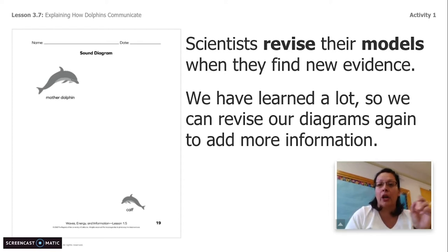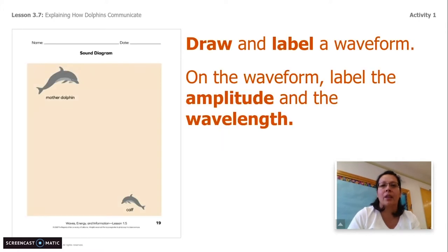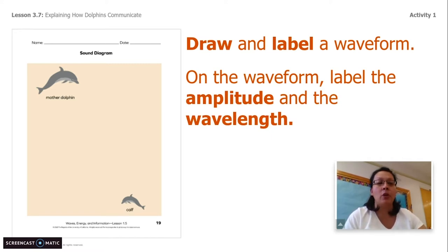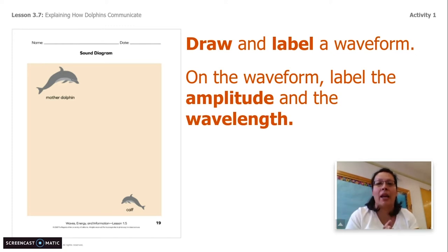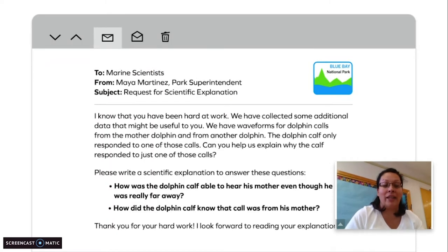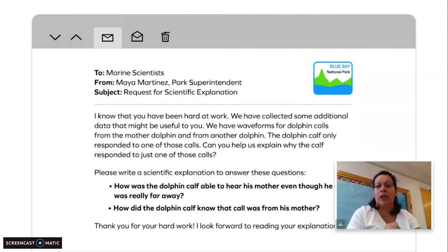So quickly stop the video, run and grab that so you can revise your diagram. I need you to include a waveform. You need to label amplitude and wavelength, and label the wavelength dolphin signature whistle — you learned that in yesterday's lesson. Whatever new information you have learned since chapter one, add that to your sound diagram. You can stop the video here, review your diagram, and add any other labels or symbols that help explain how dolphins communicate using sound.